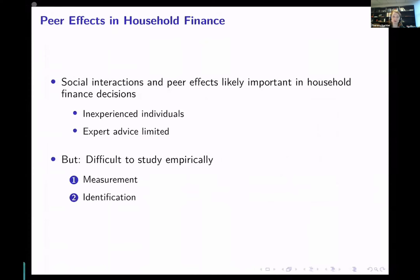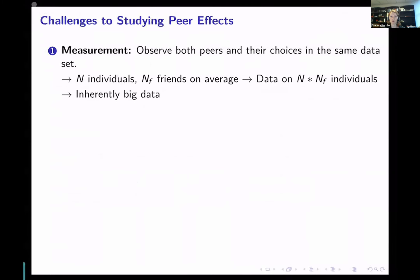When we want to not just think about why peer effects might be important but actually quantify them, it is relatively difficult to study peer effects empirically. Two of the main challenges are: first, measurement, and second, identification. On measurement — we need to observe both who your peers are as well as the individuals' and peers' choices in the same dataset, and that's already a big hurdle.